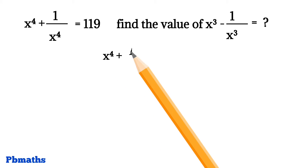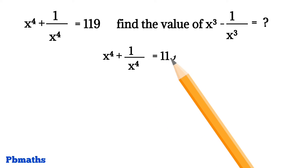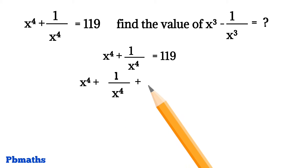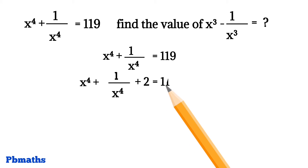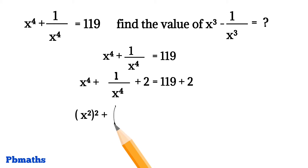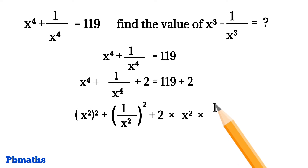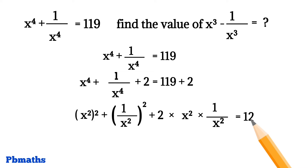Let's take x to the power 4 plus 1 by x to the power 4 equals to 119 and let's add 2 on either side of the equal. Then we have x to the power 4 plus 1 by x to the power 4 plus 2 equals to 119 plus 2. In the LHS side, we have x to the power 4 that could be written as x square to the power 2, plus 1 by x to the power 4 could also be written as 1 by x square to the power 2, plus 2 could be written as 2 into x square into 1 by x square, equals to 119 plus 2, which gives us 121.